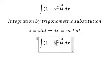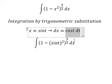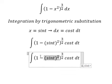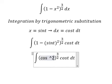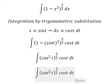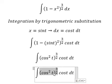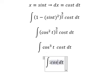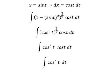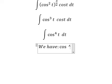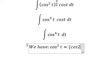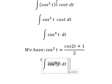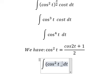So I will put dx in here, which is cos(t) dt. Then 1 minus sin(t) squared equals cos(t) squared. Multiplying by the power 3/2, we get cos(t) to the power of 3. So altogether we have cos(t) to the power of 4. Now we have the formula to apply here.